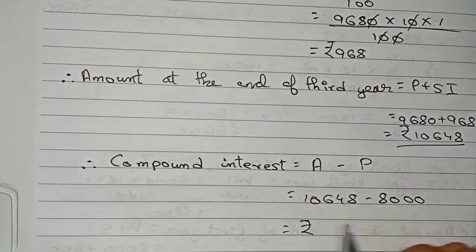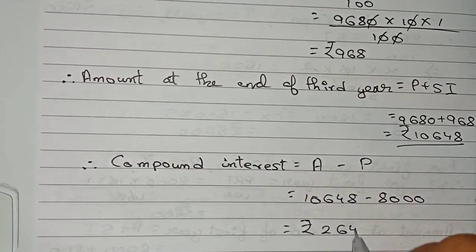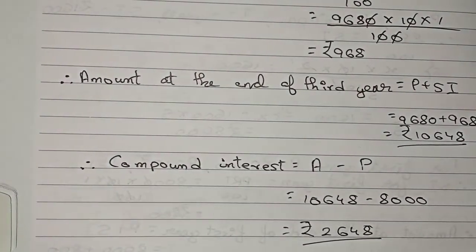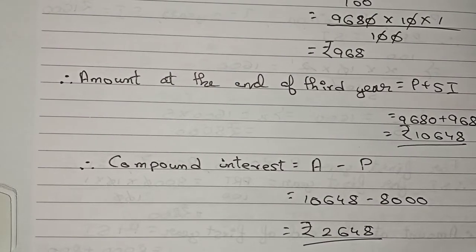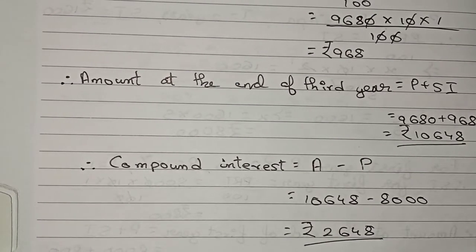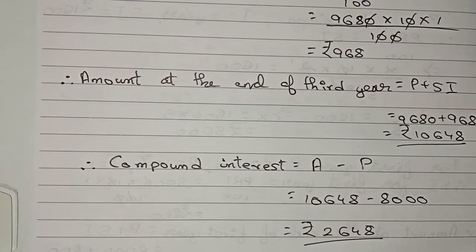So the compound interest is 10,648 minus 8,000, which equals rupees 2,648. This is the final answer for this question. Thanks for watching this video, and please subscribe to my channel for more solutions.